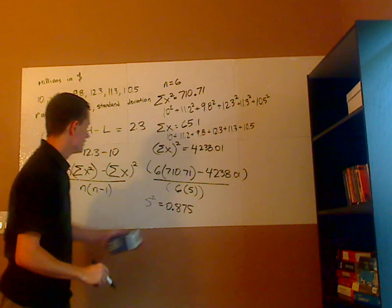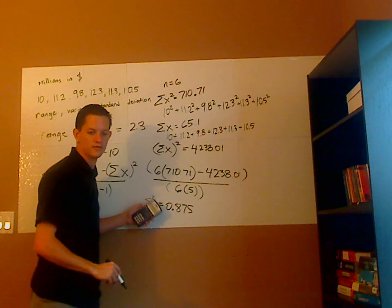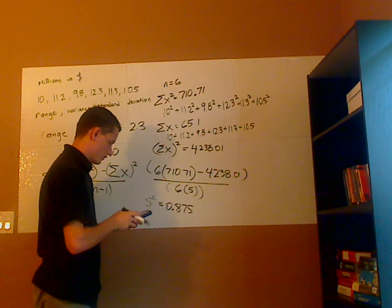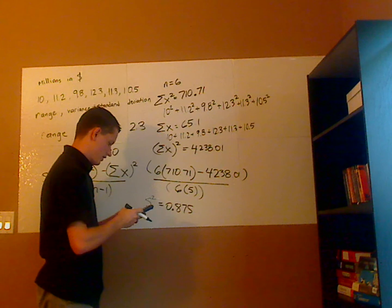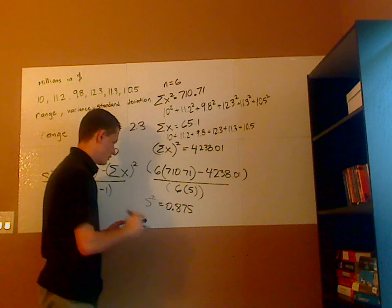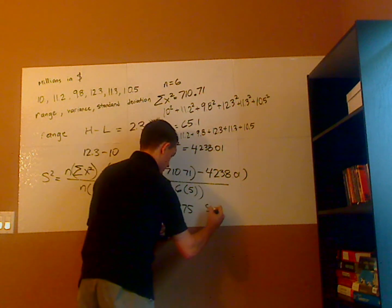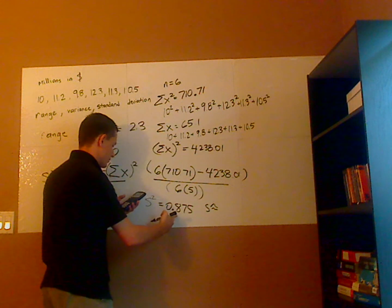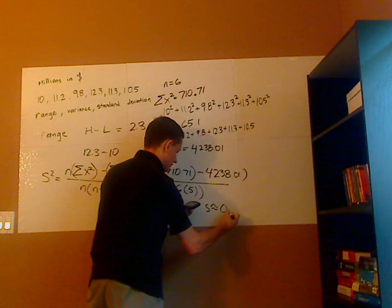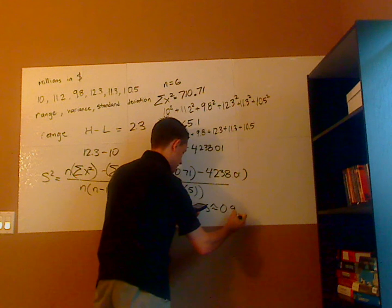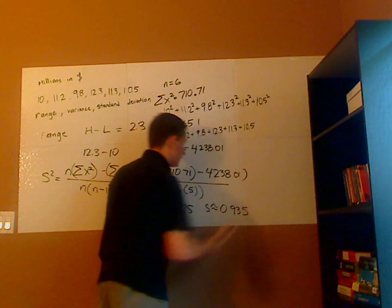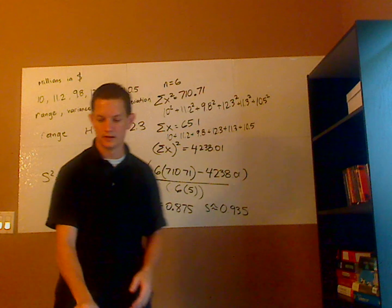Now for my standard deviation I just need to take the square root of this. So when I take the square root of it, it's 0.875. I'm going to approximate it. I'm just going to use the same number of decimal places, so it would be approximately 0.935, and that's it.